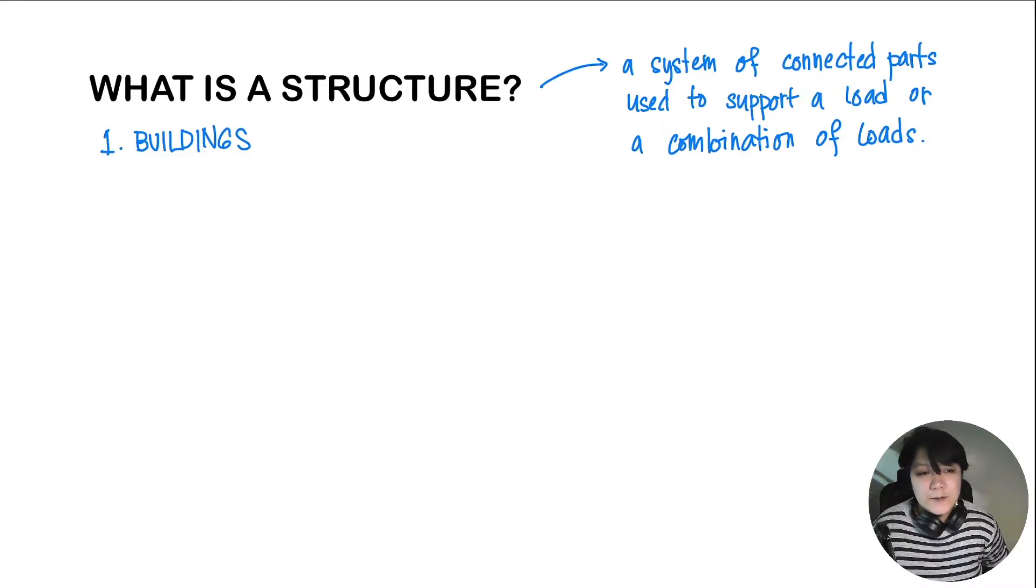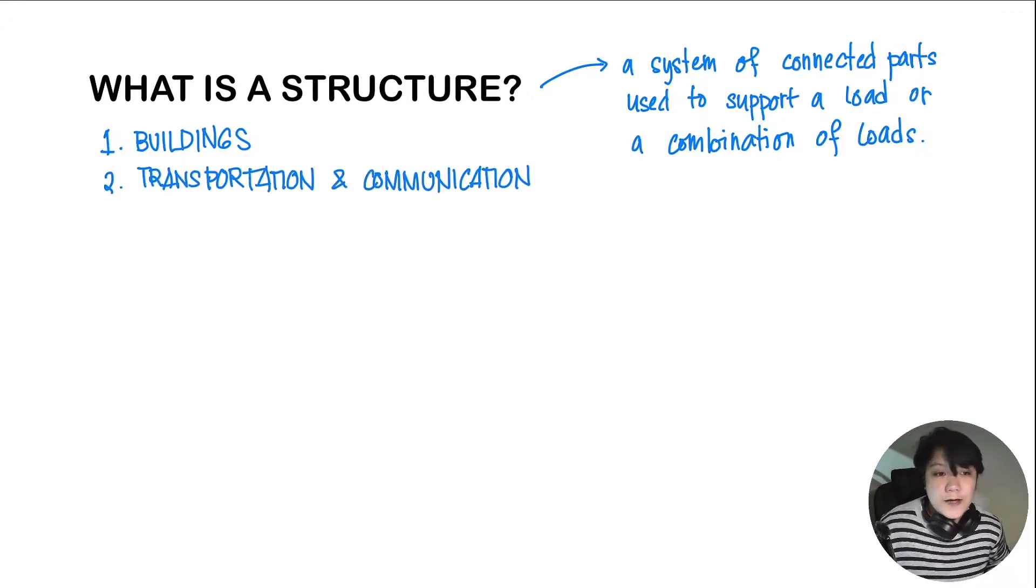Secondly, we have structures for transportation and communication. Under this, we have our roads, our highways, expressways, our airports, bridges, tunnels, harbors, ports, and docks. For communication, we also have our transmission towers, but this could also be used for electricity.